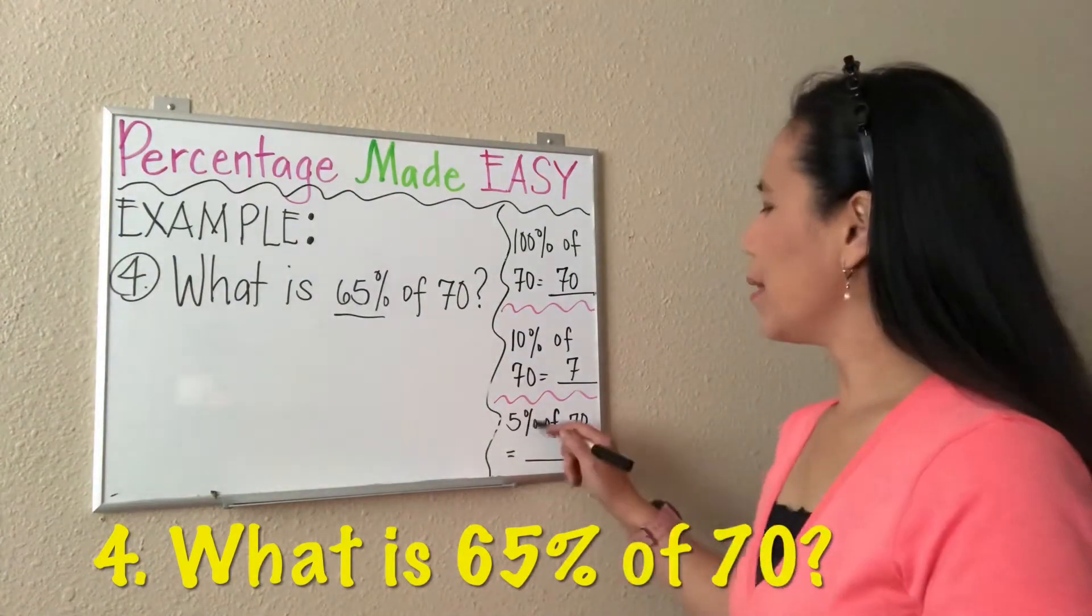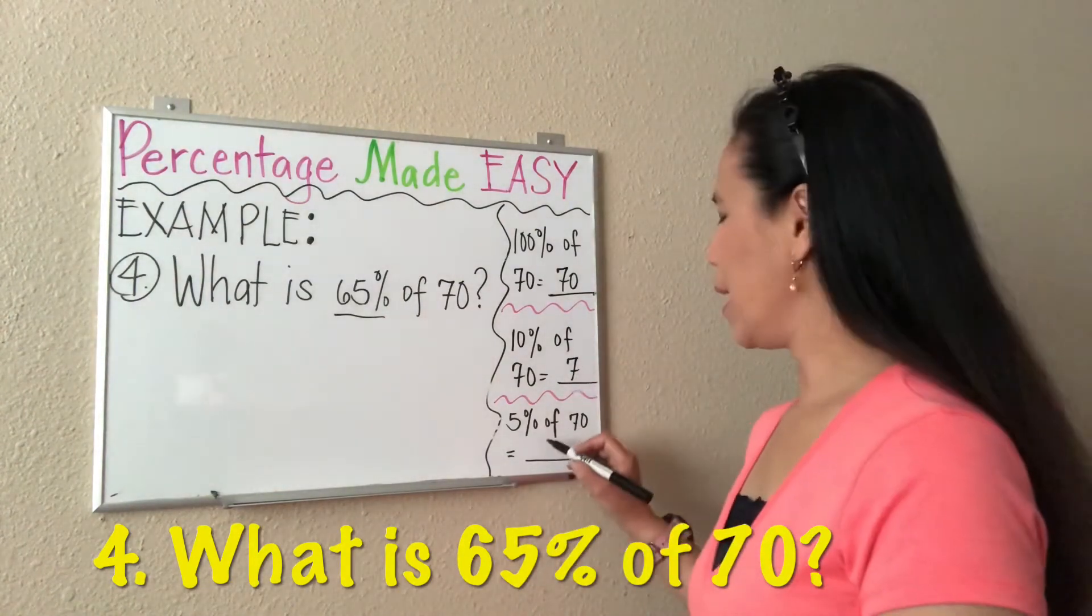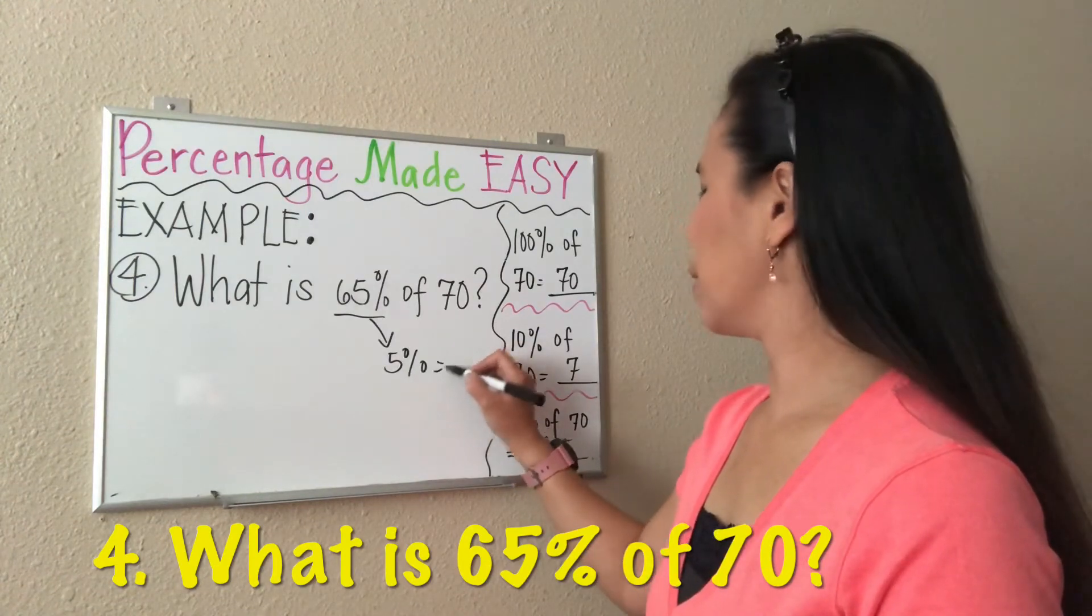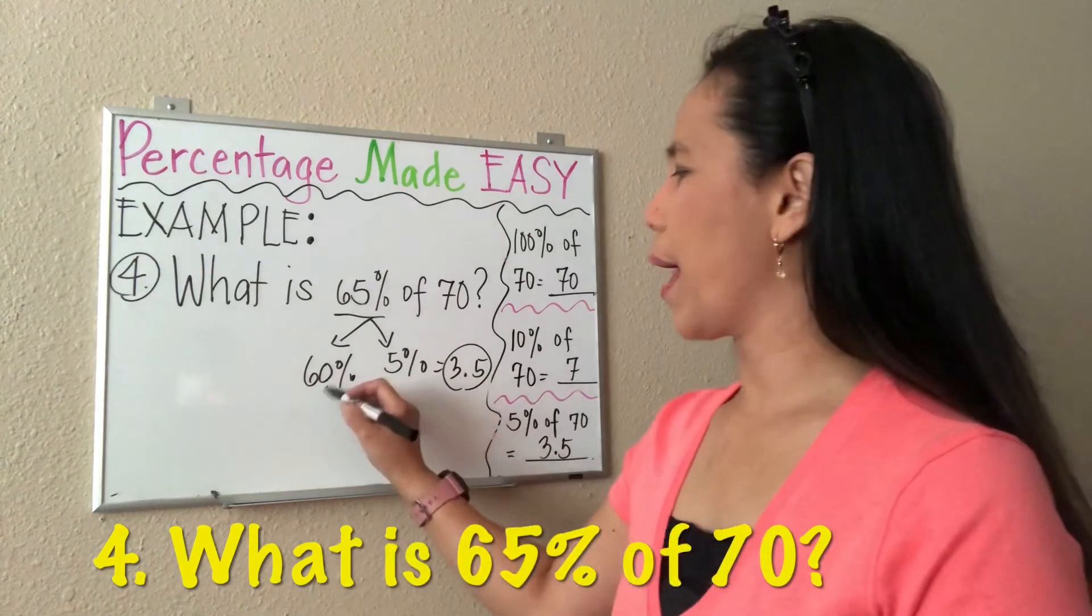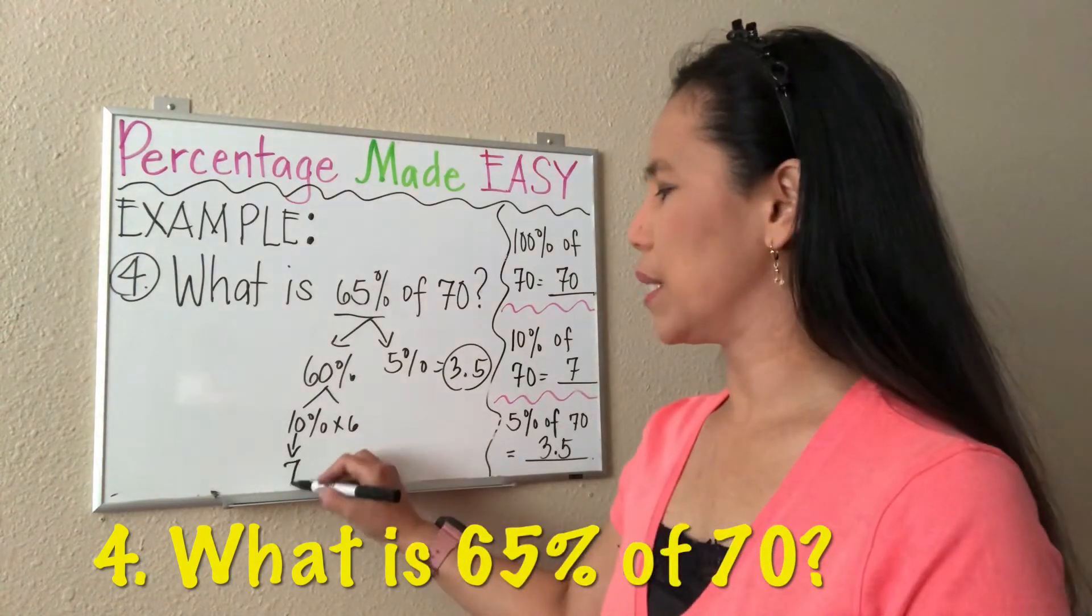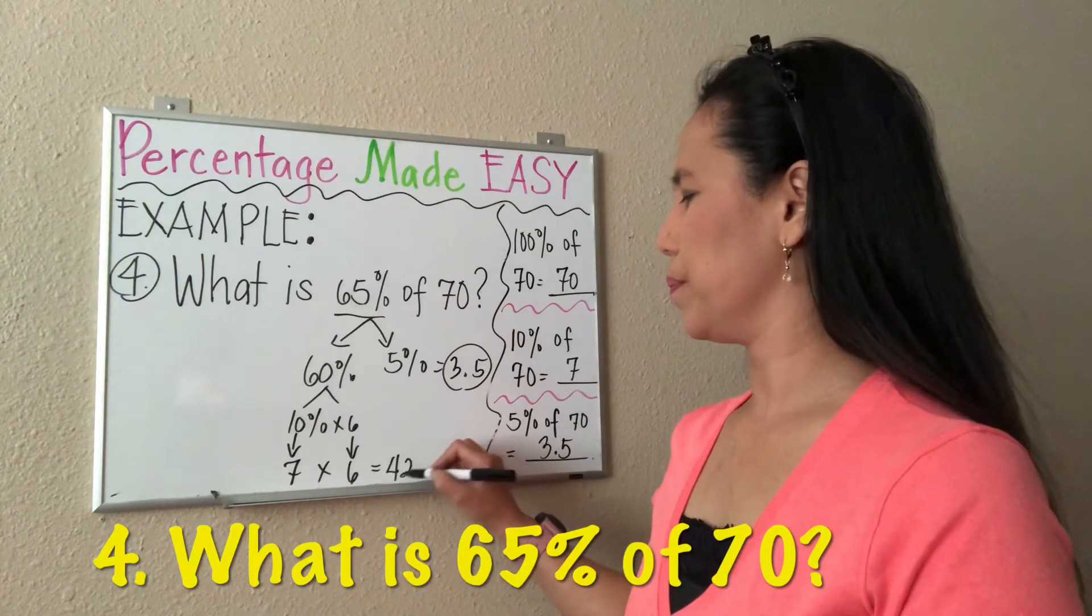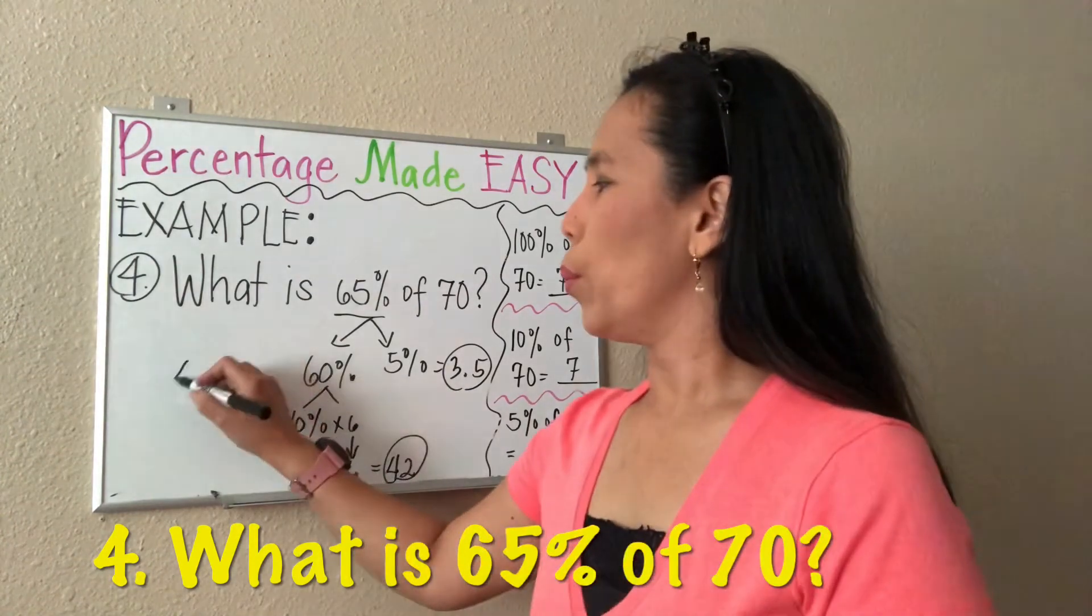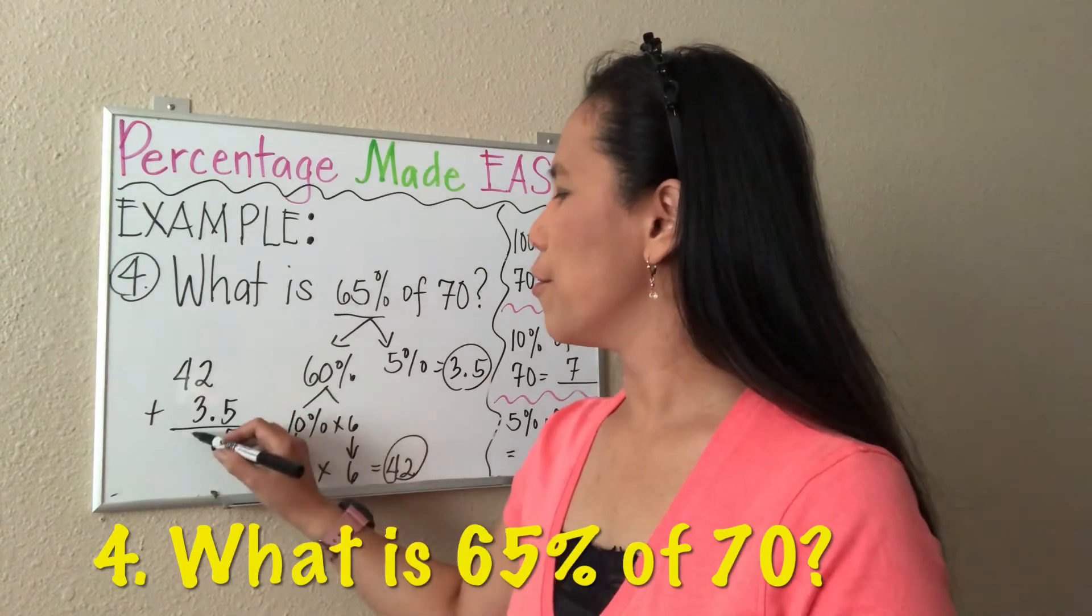What if we have 5%? Notice that 5% is half of 10%, so we can divide 7 by 2—half of 7 equals 3.5. We now know that 5% of 70 is 3.5. Now for the 60%, we know that 10% times 6 is 60%, and 10% of 70 is 7, so multiply by 6: 7 times 6 is 42. So 60% of 70 is 42, and the 5% is 3.5. We just add them together: 42 plus 3.5 gives us 45.5. So 65% of 70 is 45.5.